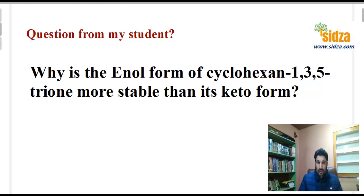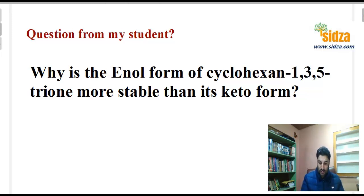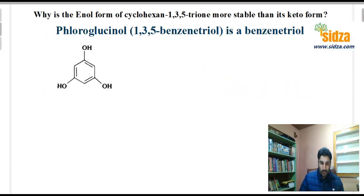The question is: why is the enol form of cyclohexane-1,3,5-trione more stable than its keto form? This is a very common question, so let's try to answer why the enol form of this compound is more stable than the keto form.